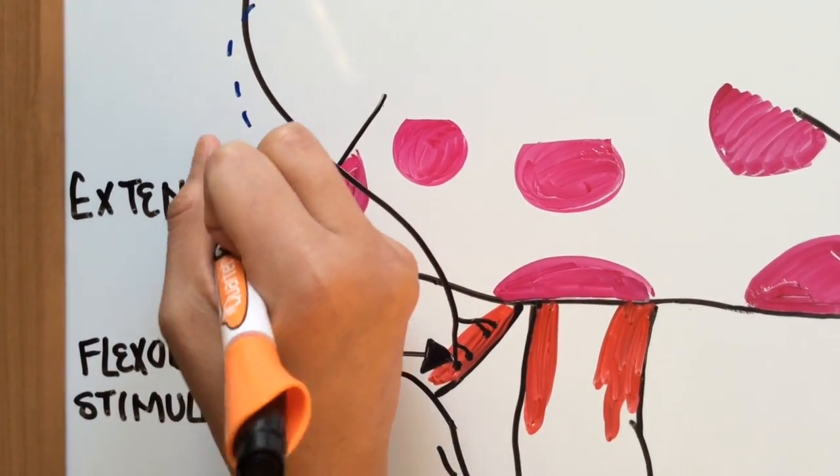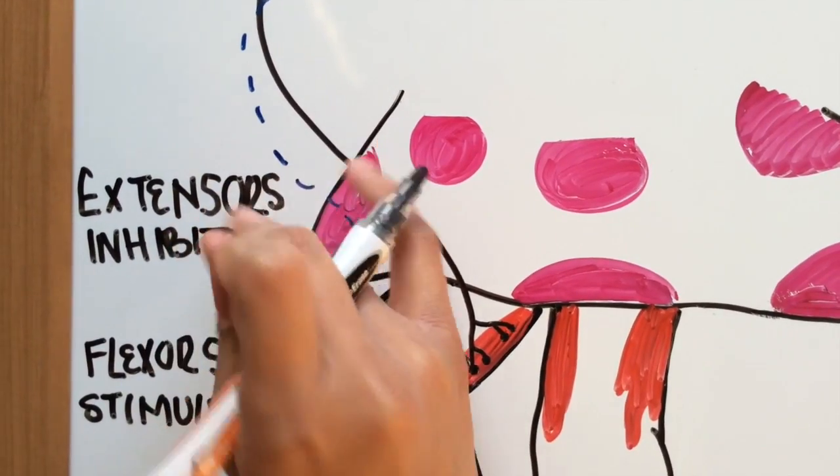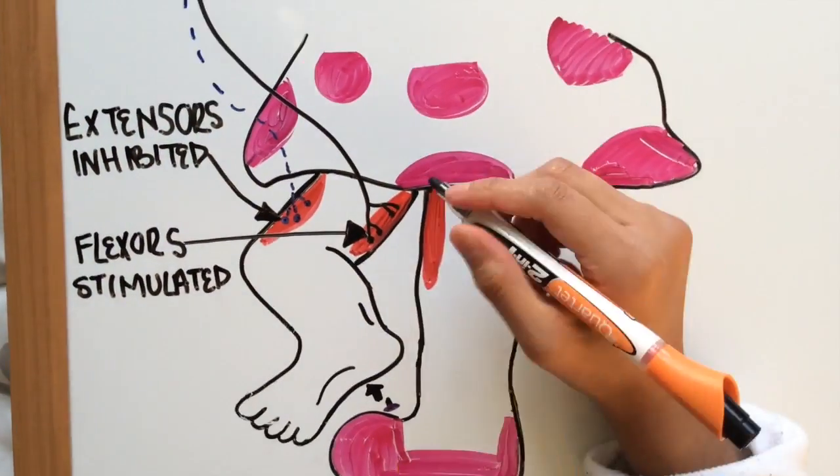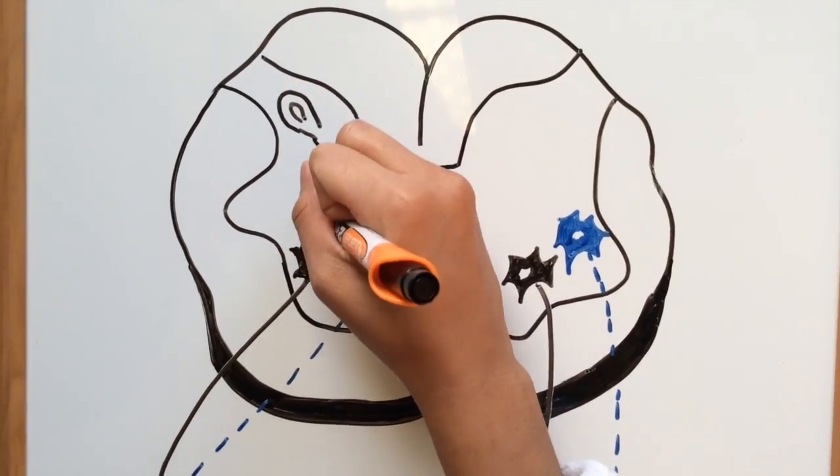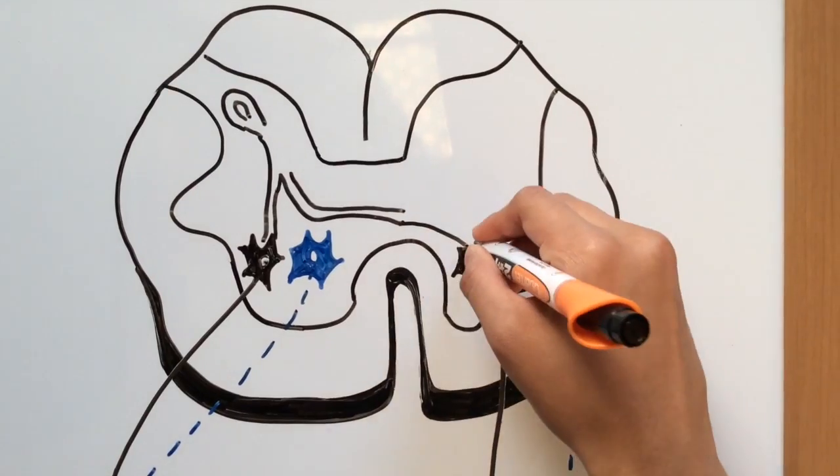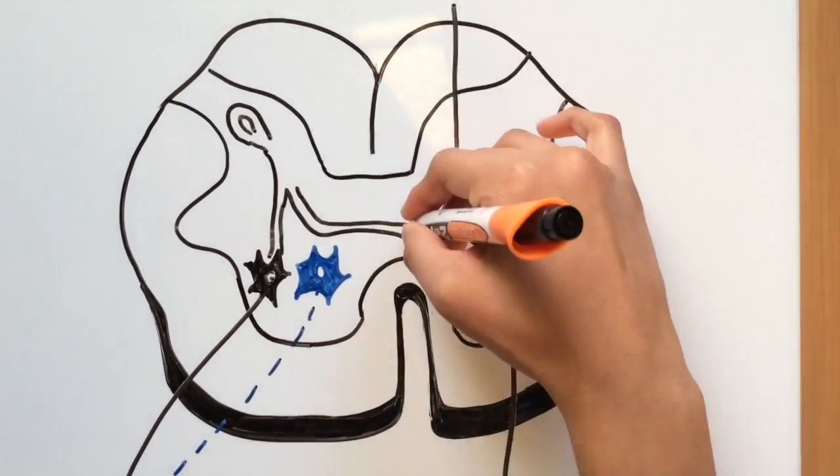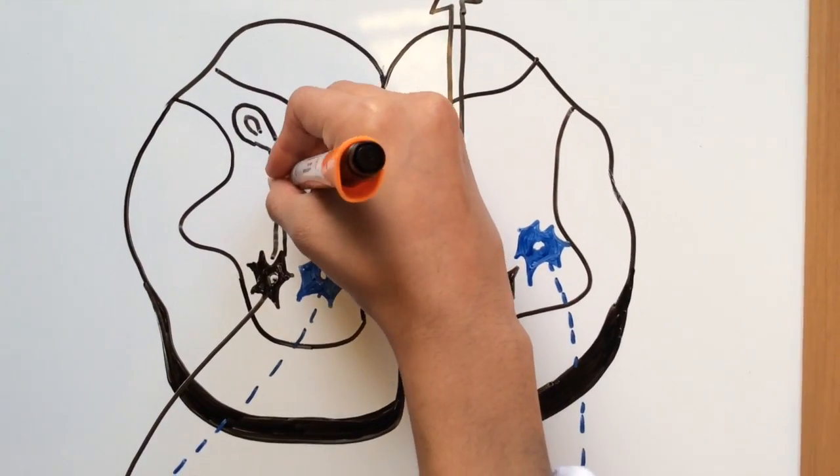The anterior muscle would be the extensor inhibited. Branches of the sensory neurons also synapse with excitatory inner neurons across the opposite side of the spinal cord as part of the crossed extensor reflex. Here we see those neurons crossing over to the other side.